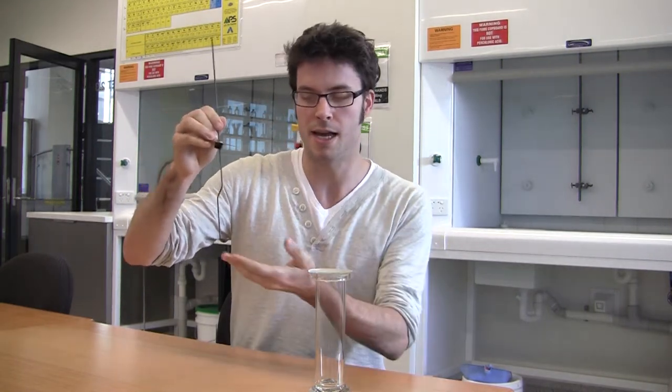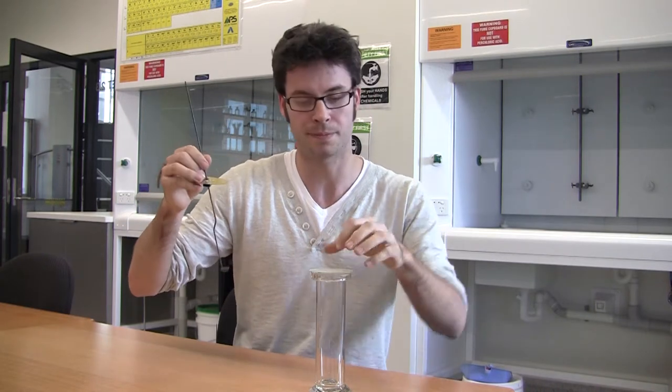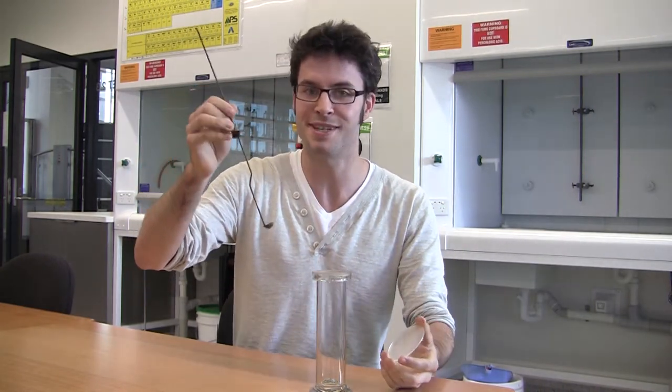What we're going to do is collect some sulfur, just some powder in this deflagrating spoon here. Again, in the fume hood, we're going to heat this over a Bunsen burner until it's very hot. In the fume hood, of course, safety first.